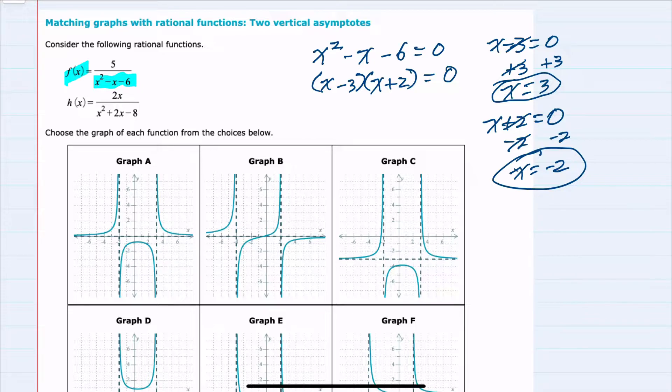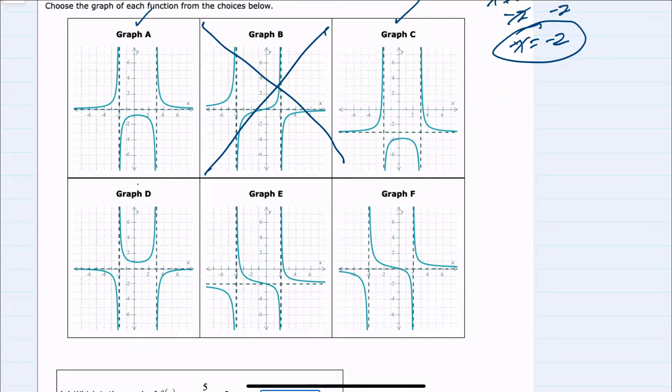I can start doing a bit of elimination here. A has asymptotes at negative two and three, so this is a possibility. B has an asymptote at x equals negative four. That is not going to be f of x. C has an asymptote at x equals negative two and x equals three, so that's a possibility.